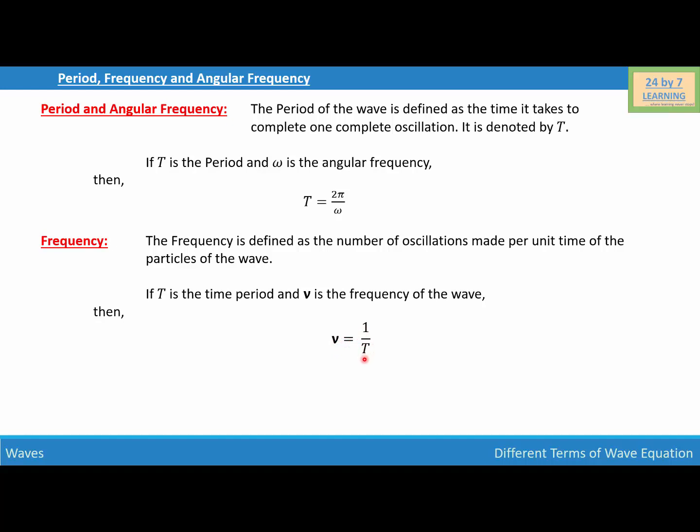If we substitute the value of T, which is 2π over omega, then we will write ν is equal to omega over 2π. And this is how we define period, frequency and angular frequency.